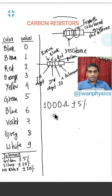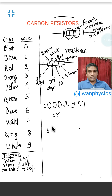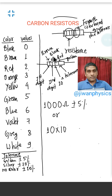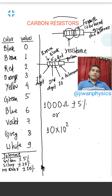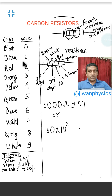We can also write it this way: first color gives the first digit, second color gives the second digit, and the third color gives the power of 10. For Red, the power is 10², so the result is 10 × 10² = 1000 ohms, with tolerance plus or minus 5%.